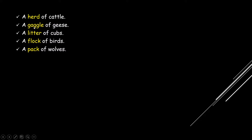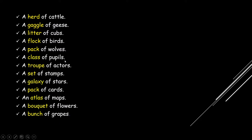A gaggle of geese. A litter of cubs. A flock of birds. A pack of wolves. A class of pupils. A troop of actors. A set of stamps. A galaxy of stars. A pack of cards. An atlas of maps. A bouquet of flowers. A bunch of grapes. All the highlighted words are collective nouns.